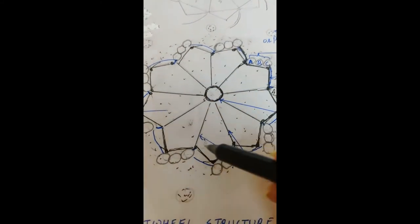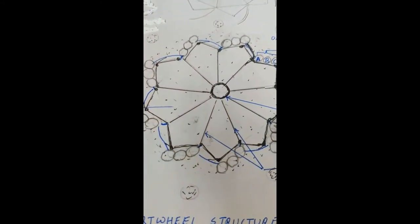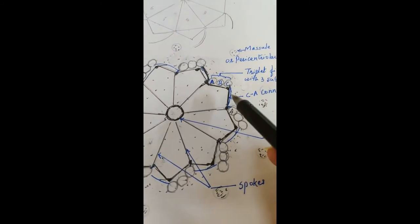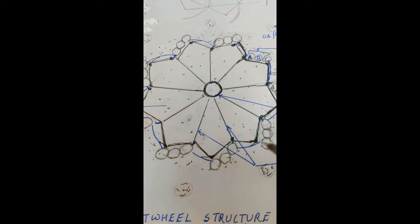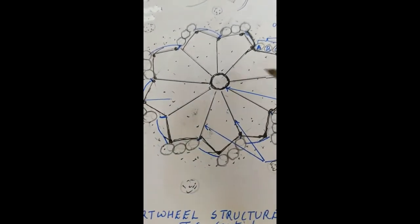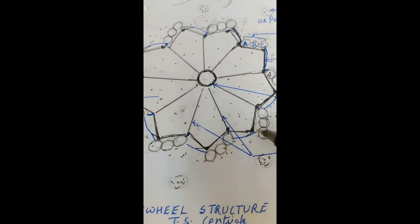And now just dot off this all the whole area to show the pericentriole region. This region is made up of the protein which will be nucleated, which will be organized by this centriole.